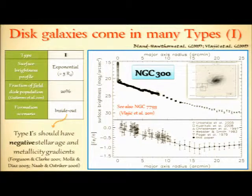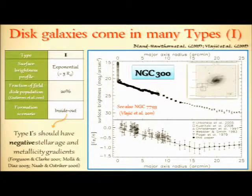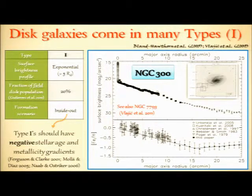Our work starts with the idea that based on their observed surface brightness profiles, there exist three main types of disk galaxies. The first, the type 1s, are defined by light profiles that decay according to a single exponential over the full extent of the galaxy, as in the case of NGC 300, whose profile remains strictly exponential over 10 disk scale lengths. Although type 1s seem to be the rarest form of disk in the field, making up only 20% of the population, theorists have told us they should form from the inside out, meaning we should expect negative gradients in both stellar age and metallicity.